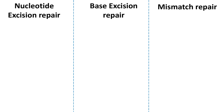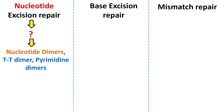Let's start with Nucleotide Excision Repair. Pay attention to the word 'Nucleotide' and ask: what type of nucleotides are repaired in this mechanism? The answer is nucleotides that are in the form of a dimer — that is, pyrimidine dimers or TT dimers.